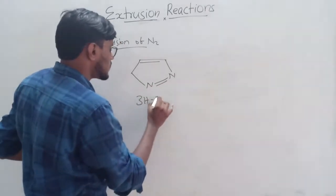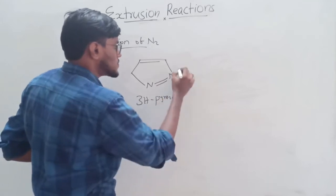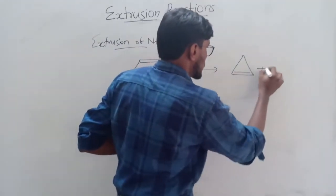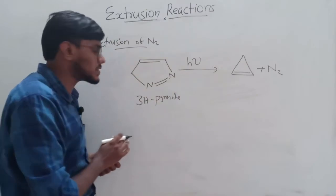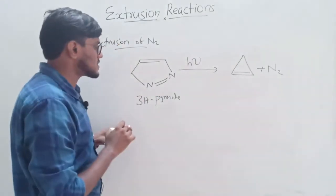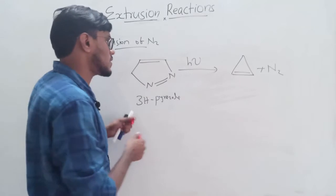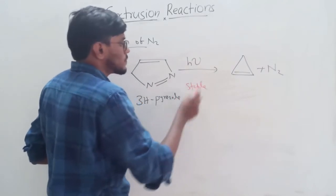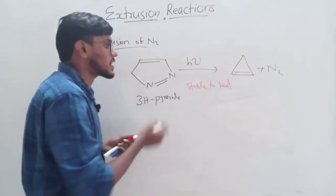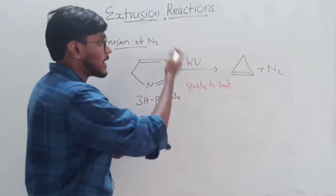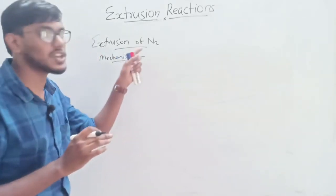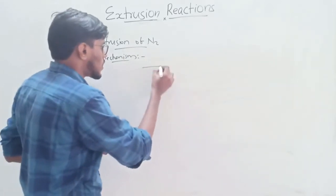Another example is 3H-pyrazole (3H-pyrolysis). It also gives an extrusion product where nitrogen is eliminated and cyclopropene is formed as the product. However, this compound is stable to heat, so it does not undergo extrusion reaction by the action of heat — it requires light for the reaction to take place.